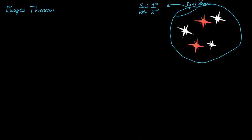Now, if Sal takes a star and runs off, that affects me — it affects the star that I can get. Let's say I get a red star, and we're just going to use RRM to represent me getting a red star. Now, if we know this — we know that Sal pulled out a star, we didn't get to see what it was, and he just ran off — what's the probability that Sal has a red star?